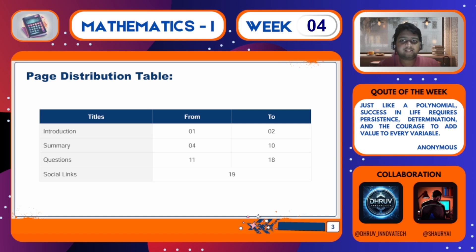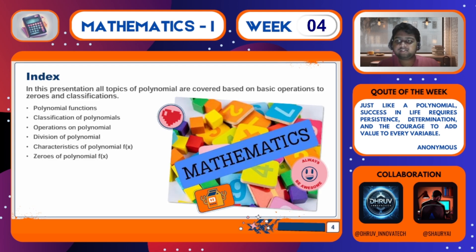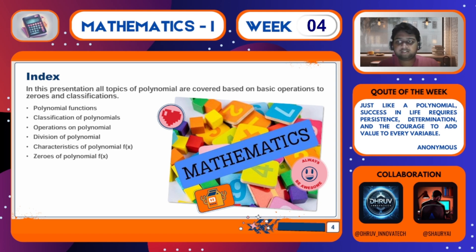This is the page distribution table, you can use it while accessing the notes. To begin with the index first, in this week 4, polynomials have been covered. We will first go through polynomial functions, then classifications of polynomials, operations on them, then division of polynomials. Then characteristics of polynomial functions or graphs, and then some theory about zeroes of polynomials and one important concept of multiplicity.